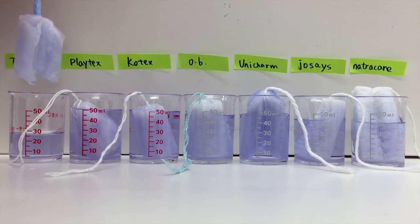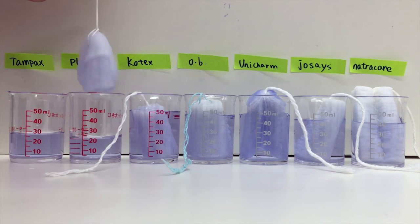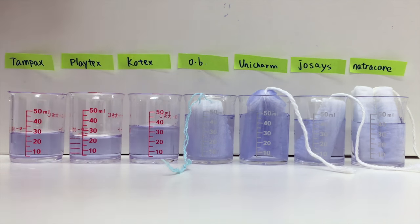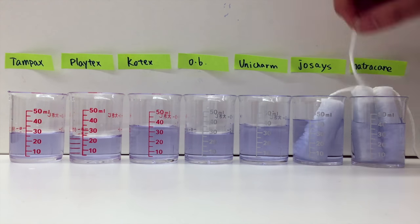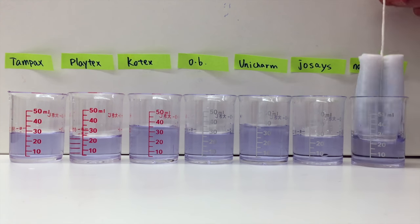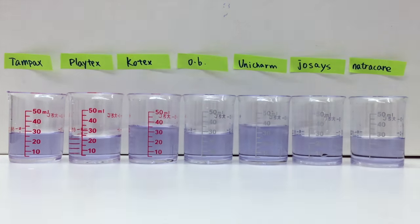So Tampax can absorb 23ml, Playtex 28ml, Kotex 15, OB 23, Unicharm 14, Josase is at 25ml and Nature Care also 25ml.